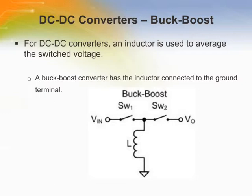A buck-boost converter has the inductor connected to the ground terminal. The DC average inductor current is equal to the sum of the input and output current. This converter will invert the input to produce a lower or higher output voltage of opposite polarity.